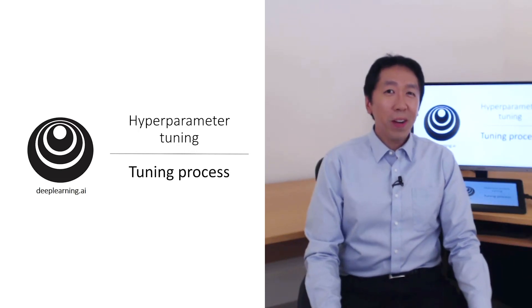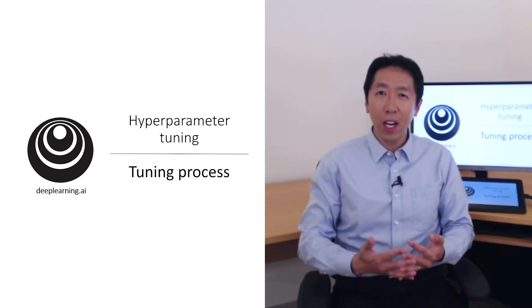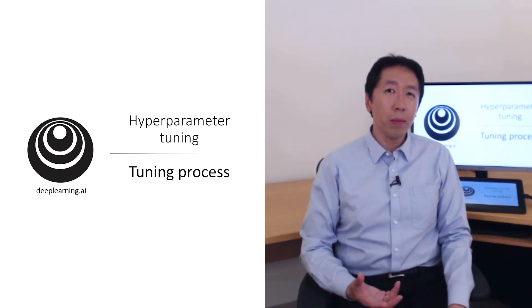Hi and welcome back. You've seen by now that training neural nets can involve setting a lot of different hyperparameters. Now, how do you go about finding a good setting for these hyperparameters?